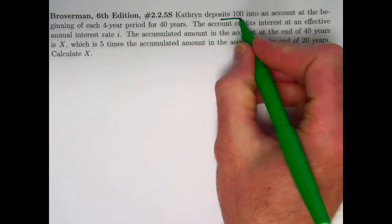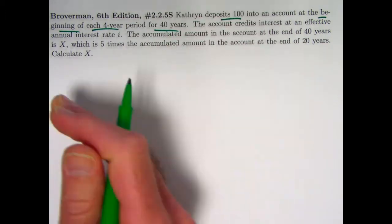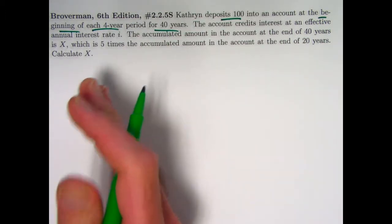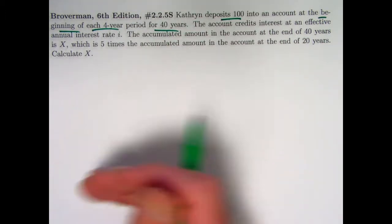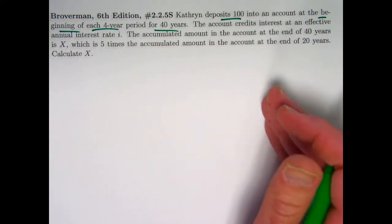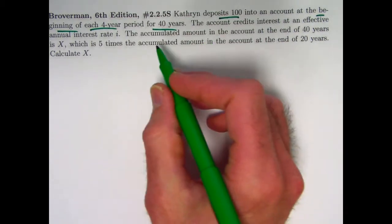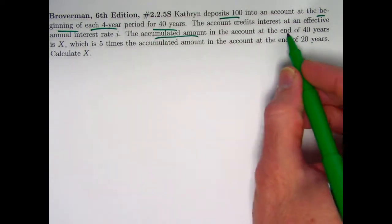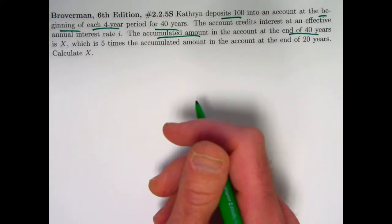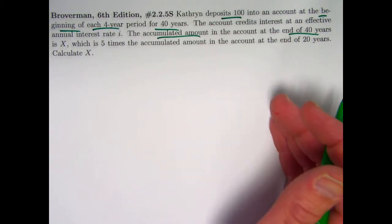Catherine deposits 100 into an account at the beginning of each four-year period for 40 years. So over 40 years, she's starting at time zero with a deposit, doing it at the beginning of each four-year period. Evidently, that means the last deposit will be 36 years from the starting deposit. And we're going to be finding ultimately the accumulated value at the end of 40 years. This is going to be an annuity due. We're going to be finding the future or accumulated value of an annuity due.